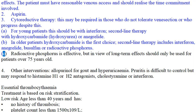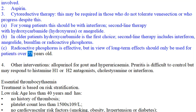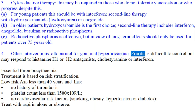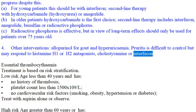C. Radioactive phosphorus is effective, but in view of long-term effects should only be used for patients over 75 years old. 4. Other interventions: Allopurinol for gout and hyperuricemia. Pruritus is difficult to control but may respond to histamine H1 or H2 antagonists, cholestyramine, or interferon.